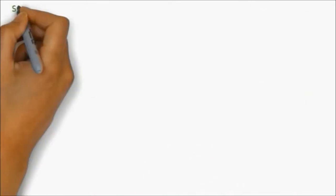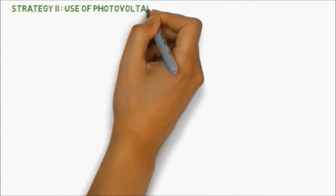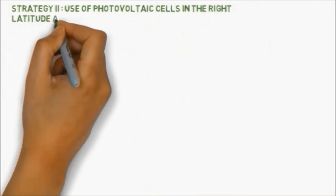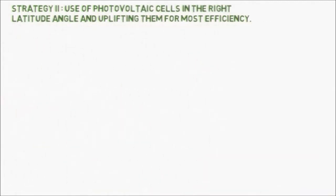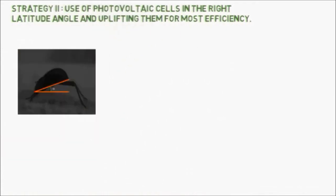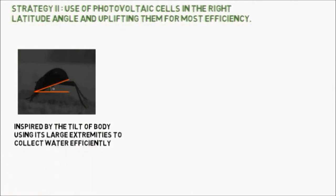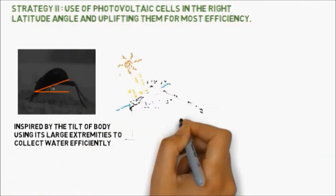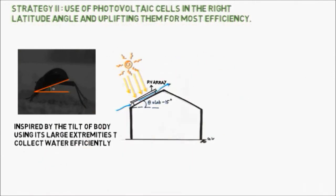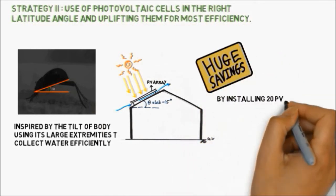Design strategy 2: use of photovoltaic cells in the right latitude angle and uplifting them for most efficiency. This was inspired by the tilt of the body of the beetle using its large extremities to collect water efficiently. Huge savings up to 18.25 megawatt per annum can be made.